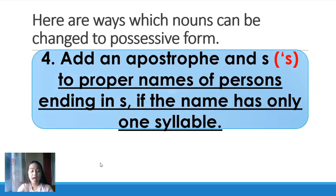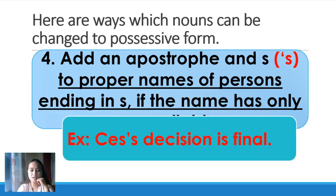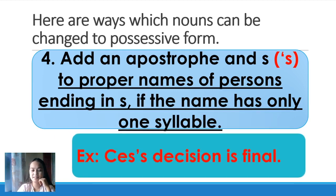Number four: add an apostrophe and S to proper names of persons ending in S, if the name has only one syllable. If the name has only one syllable and ends with S, you will add apostrophe S. Example — a name ending with S that is only one syllable: 'Ross's decision is final.'